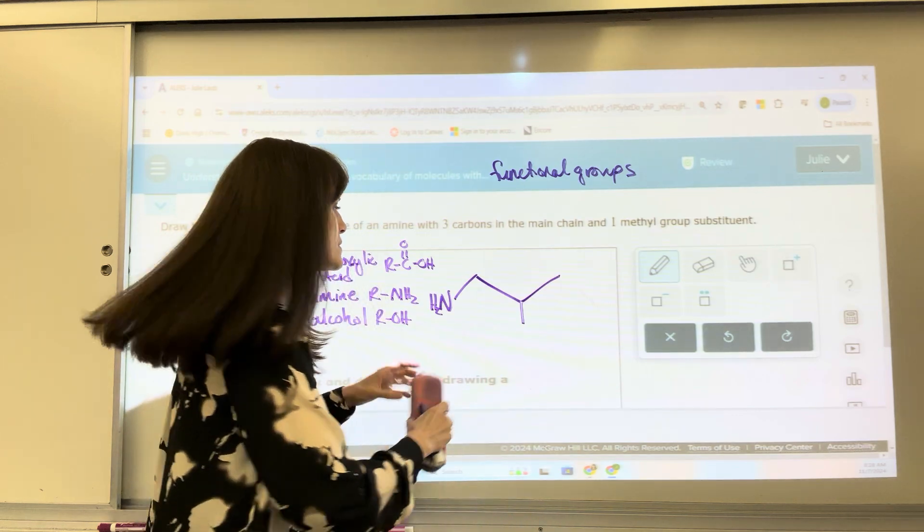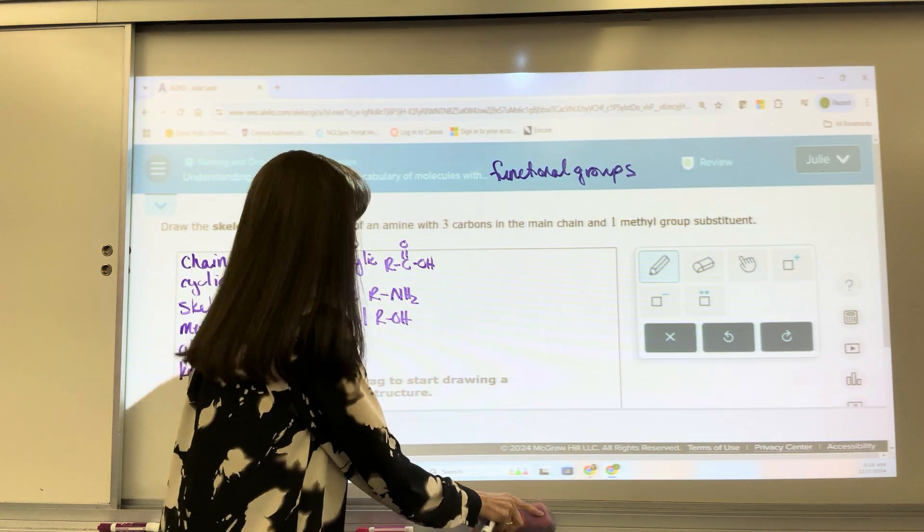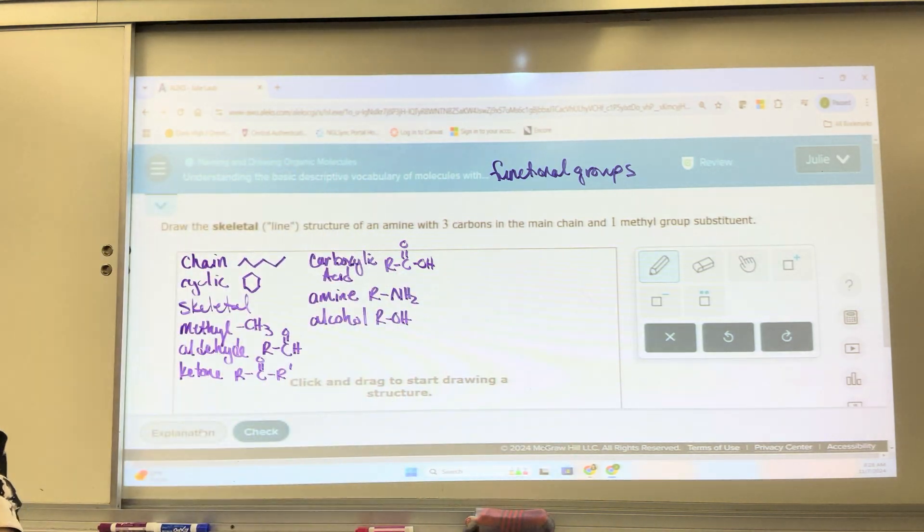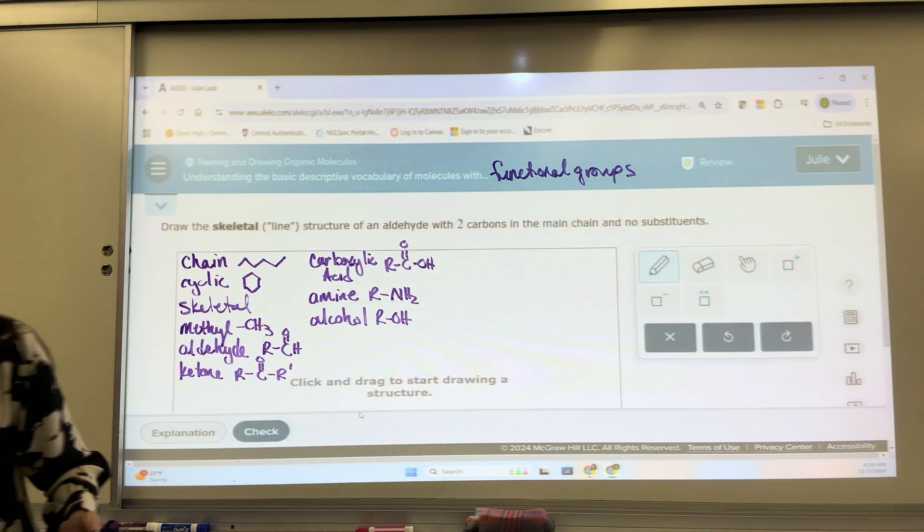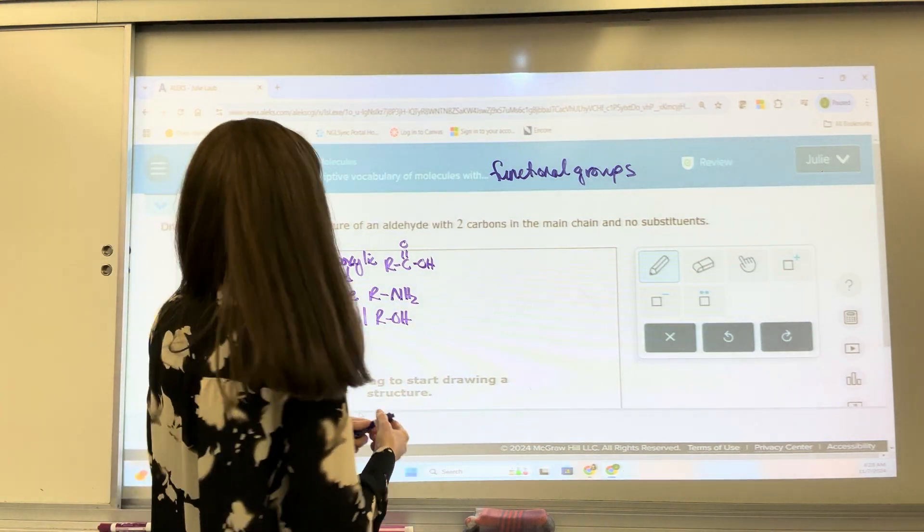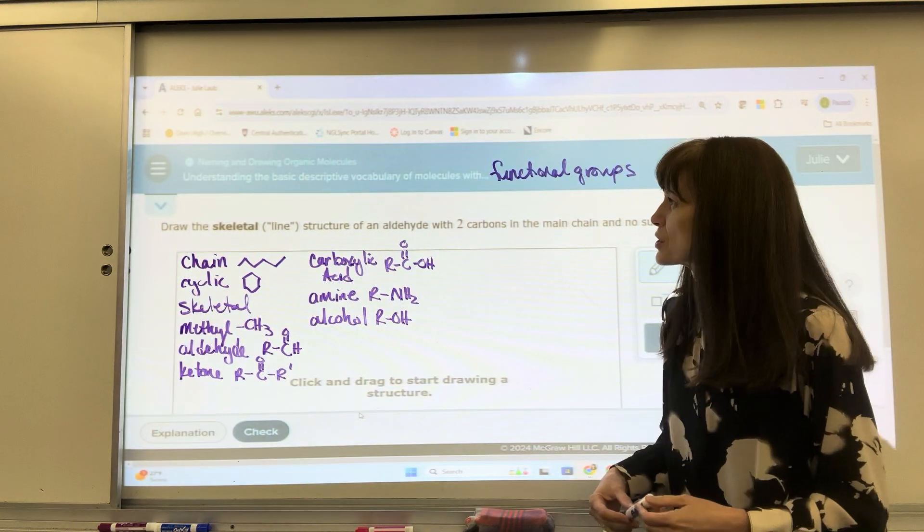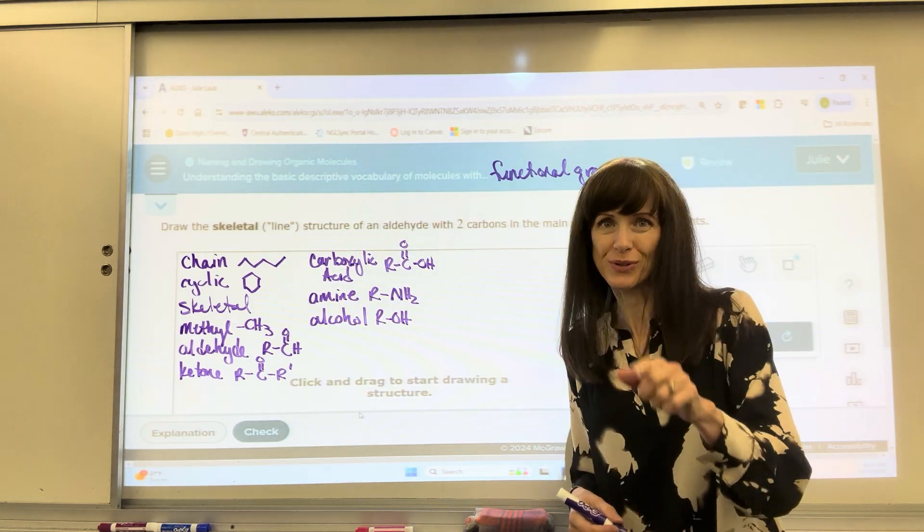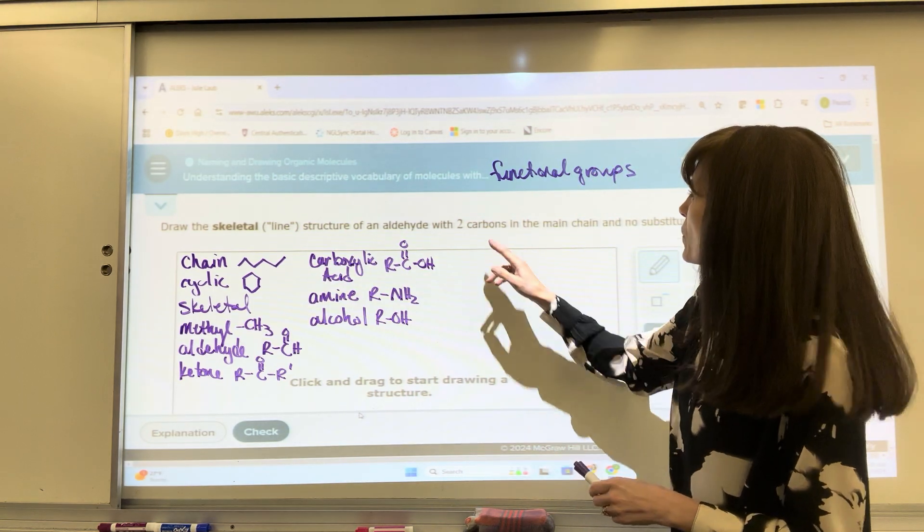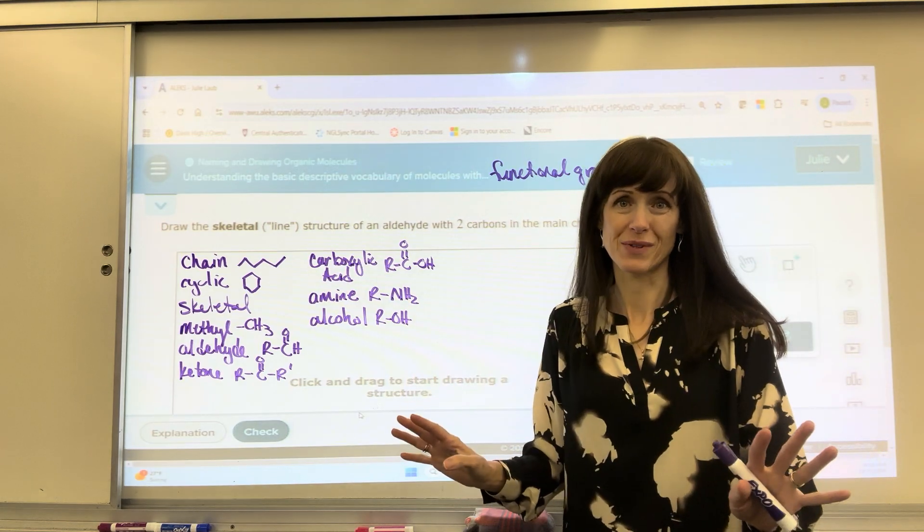Let's do one more. Let's do maybe get another functional group here. Okay, this one. This is draw the skeletal structure of an aldehyde. Oh, I like aldehydes. There's something unusual. It's an exception for aldehydes. With two carbons in the main chain, no substituents.